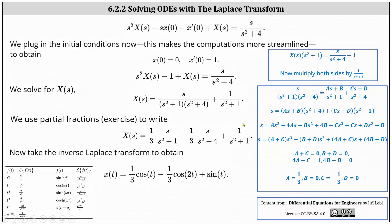And we still have one divided by the quantity s squared plus one. Now we take the inverse Laplace transform of both sides of the equation. The inverse Laplace transform of big X of s is equal to x of t. The inverse Laplace transform of one-third times s divided by the quantity s squared plus one gives us one-third cosine t, minus one-third times s divided by s squared plus four gives us minus one-third cosine two t, and plus one divided by the quantity s squared plus one gives us plus sine t. This is the particular solution to the given initial value problem.